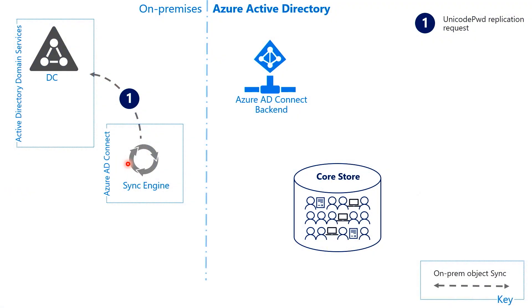The sync engine is like a domain controller. Should we protect it like a DC then? Exactly — the way we ask customers is to treat this infrastructure the same way as a domain controller. Then the domain controller responds, and the replication payload with the changes and all the passwords comes back in the original Active Directory encryption. This is the same protocol that domain controllers use to talk to each other, so that payload contains the passwords in MD4 format.